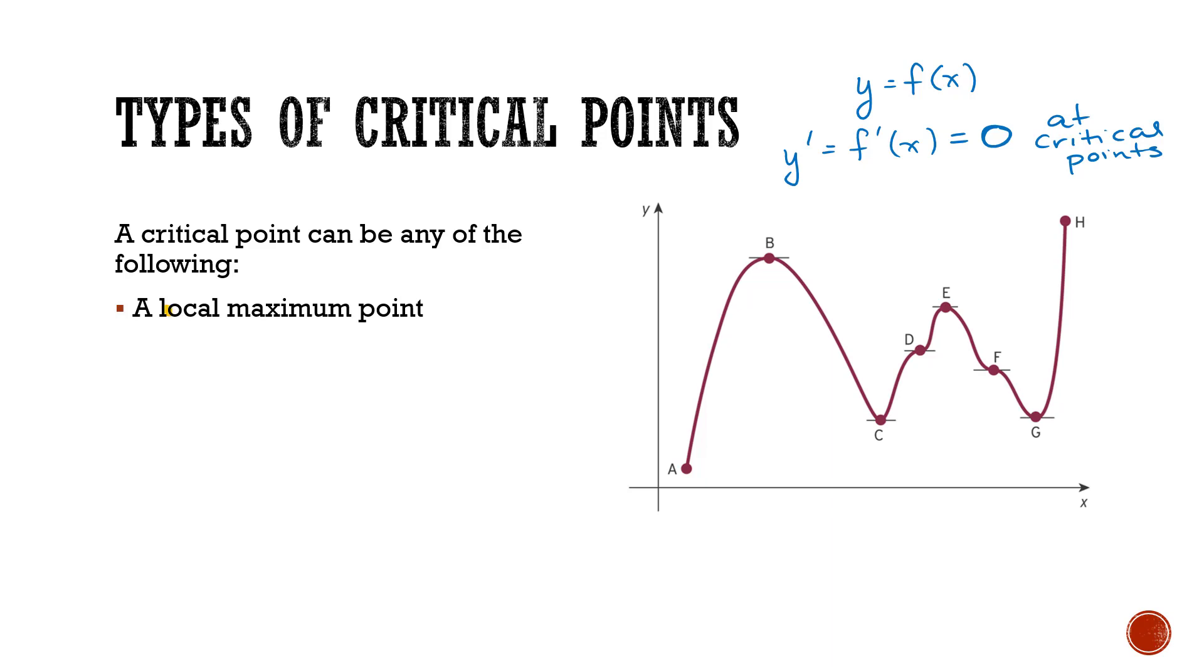So now if we look at the local maximums that we have in this graph, it's right here at B and at E. And we can see that the slopes at these points are zero. f prime of x is equal to zero at these points. So that's why local maximums would be considered critical points. The slopes at those points are equal to zero.